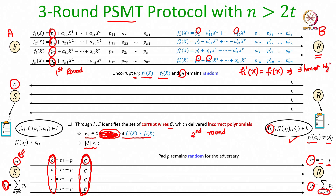Let us now argue why this protocol is a PSMT protocol. PSMT requires two properties. First, reliability: the receiver should be able to output the sender's message, which follows from the fact that both sender and receiver compute the same pad P. Second, privacy: the adversary's view (controlling up to T channels) should be independent of the sender's message — whatever the adversary learns should not help infer whether the message was M or M'. This follows from the fact that pad P is random from the adversary's viewpoint, as proved in the pad exchange protocol.